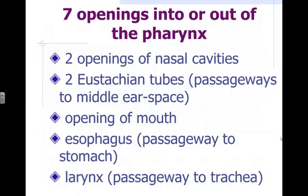There are structures that block these substances from going the wrong way. We'll talk about the epiglottis, which blocks the larynx when you swallow, in the next lesson. As for the nasal cavity — how come food doesn't go up your nose when you swallow? That's the purpose of the uvula. When you swallow, your tongue pushes the food back and presses the uvula, which rises and blocks the two openings of the nasal cavity, preventing food and drink from going up your nose.